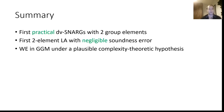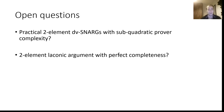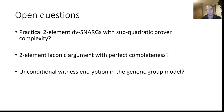To summarize: we show the first practical designated verifier SNARG with two group elements; the first two-element laconic argument with negligible soundness error; and how to get witness encryption in the generic group model under a plausible complexity-theoretic hypothesis. Open questions include: our designated verifier SNARG relied on the Hadamard linear PCP, which has quadratic prover complexity — maybe we can do better. Maybe we can present a two-element laconic argument with perfect completeness, or improve the witness encryption result and prove it unconditionally in the generic group model. Thank you.